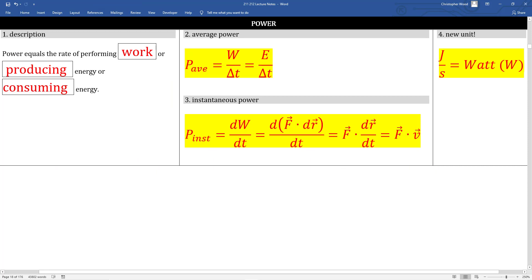Last section, power. Power seems to be confused with work and energy pretty frequently. Power equals the rate of performing work or producing energy or consuming energy. If I drive my car from 0 to 60 mph in 10 seconds and compare that to driving that same car from 0 to 60 mph in 5 seconds, I see that in both cases the net work is the same. But the power produced by my engine in taking my car from 0 to 60 mph in 5 seconds is much greater compared to when it took my car from 0 to 60 mph in 10 seconds.